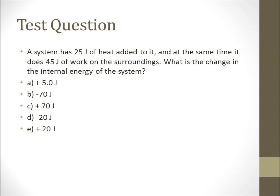A system has 25 joules of heat added to it, and at the same time it does 45 joules of work on the surroundings. What is the change in the internal energy of the system? The change in internal energy is equal to heat plus work. In this problem, 25 joules of heat is added to the system, so the Q value is positive 25 joules. The system does 45 joules of work on its surroundings, so the W value would be negative 45 joules. You'd have 25 joules minus 45 joules, leaving you with negative 20 joules in total. This would be the change in internal energy. Answer choice D would be the correct answer.